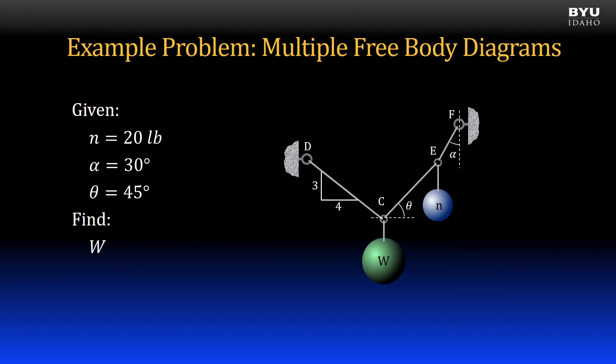This example requires multiple free body diagrams to solve. We have two weights: N, which is known at 20 pounds, and W, which is what we are to find. We are given the orientations of the chords relative to the horizontal and/or vertical axes.